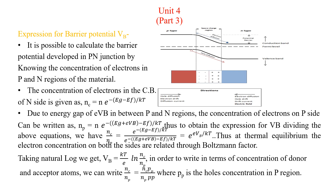From Fermi-Dirac statistics, the concentration of electrons in the conduction band of the n side is given by: nc = N · e^(−(EG − EF)/kT). Here EG is the energy gap of the material — 1.1 eV for silicon and 0.7 eV for germanium. EF is the Fermi level position and k is the Boltzmann constant. N is the total number of electrons in the material, and nc are those in the n region.